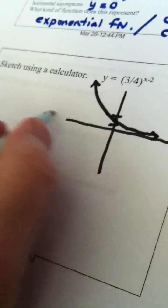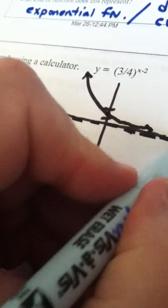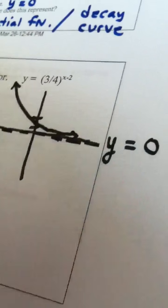When I draw my broken line here to indicate an asymptote, this is the line whose equation is y equals 0.